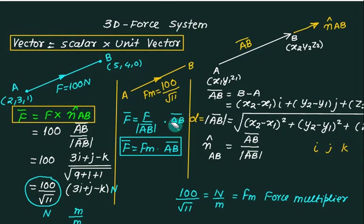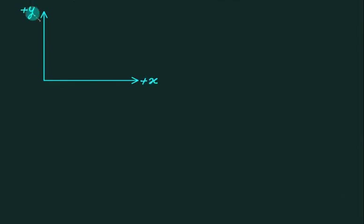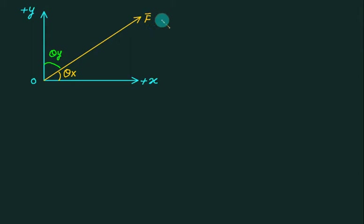Definition one: multiply force by unit vector. Definition two: multiply force multiplier by vector. Now, in a two-dimensional force system, a force inclined at angle theta_x with respect to the x-axis and theta_y with respect to the y-axis is written as the force vector F bar equals Fx times i plus Fy times j.